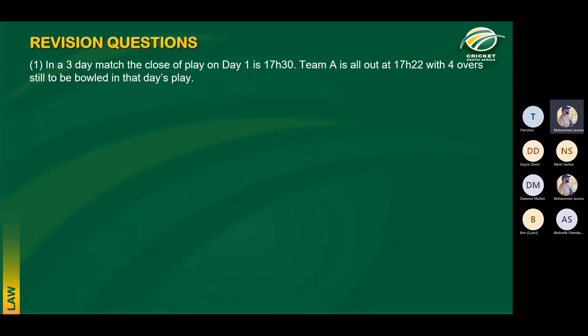To begin this evening, here are some questions from Monday. In a three-day match, close of play on day one is at 5:30. Team A is all out at 17:22, with four overs still to be bowled. We know that if 10 minutes or less remains before the agreed close of play, there should be no further play, and no change shall be made to the start of the next day's play.